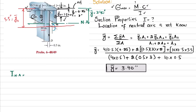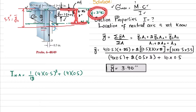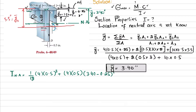Now we find the moment of inertia I about the neutral axis. For element 1, using the parallel axis theorem: I1 = (1/12)·4·(0.5)³ + A1·d1². Element 1 is away from the neutral axis, so d1 = ȳ − y1' = 3.40 − 0.25, squared. This gives us the contribution of element 1.